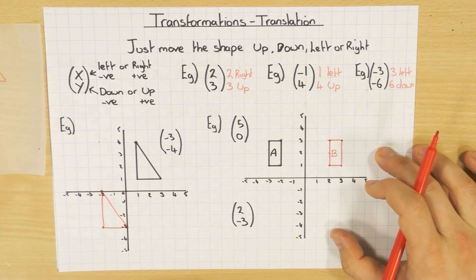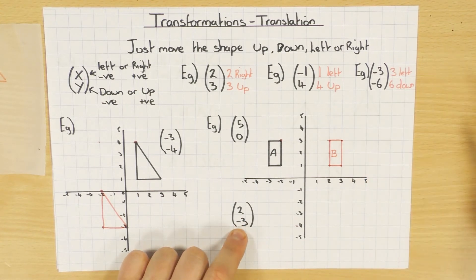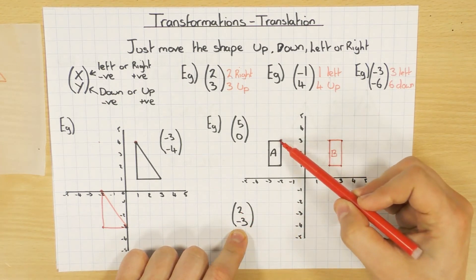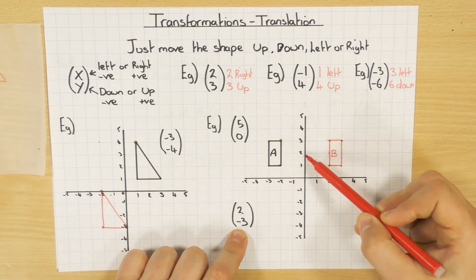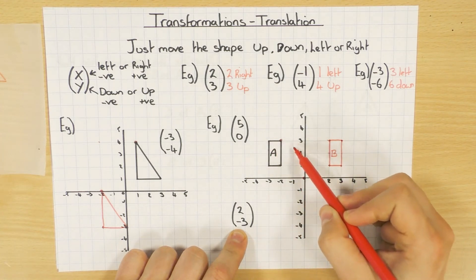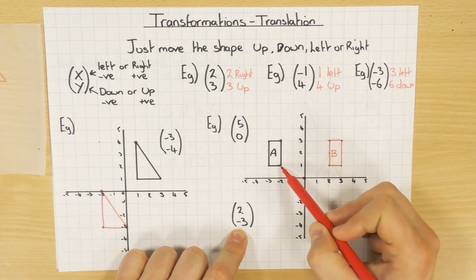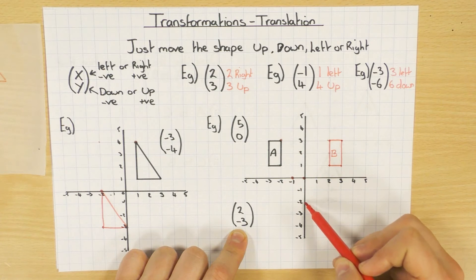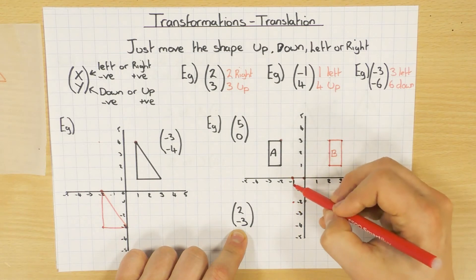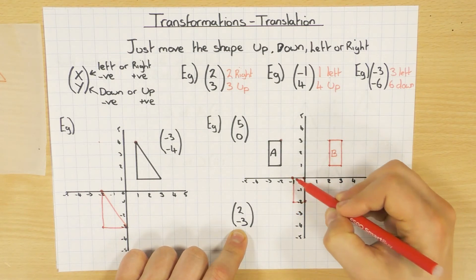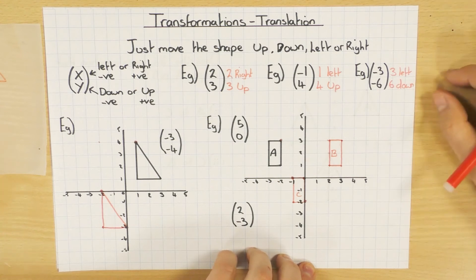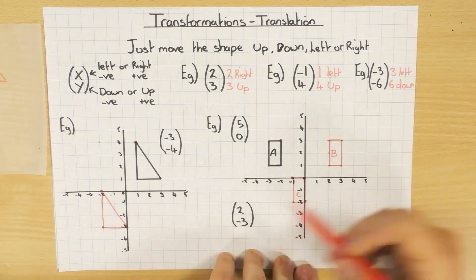Sometimes they ask you to do another one. This vector is 2, negative 3 — so 2 to the right and 3 down. I go 1, 2 across and 1, 2, 3 down for each point of the shape. Don't worry if it overlaps the axes — that's absolutely fine, you haven't done it wrong; sometimes that's just what they want you to do. This is going to be called shape C.